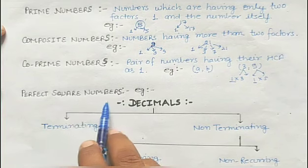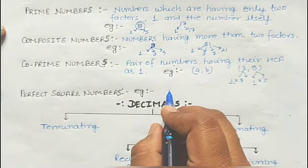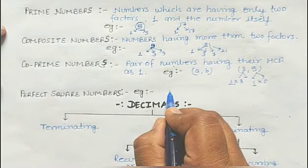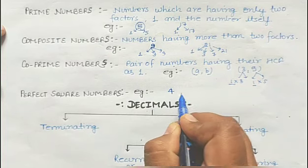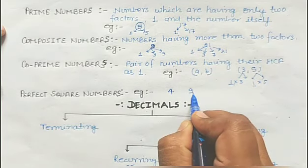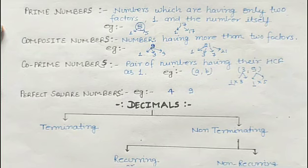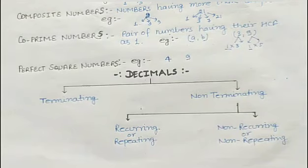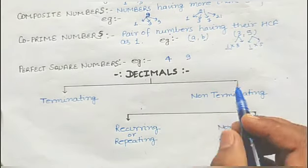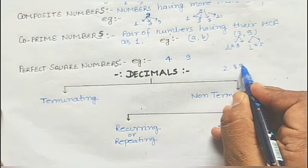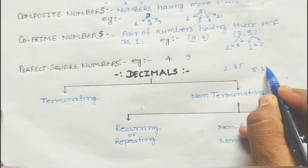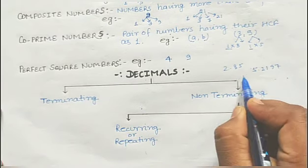Perfect square numbers: simply, 4 is the square of 2, 9 is the square of 3. These kinds of numbers which are perfect squares are known as perfect square numbers. Our next topic is decimals — numbers like 2.35, 5.2, 1.97, and so on.